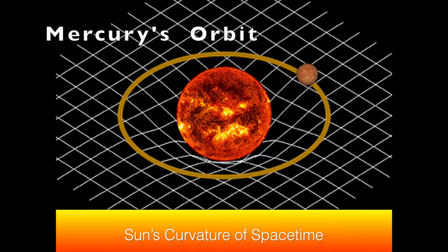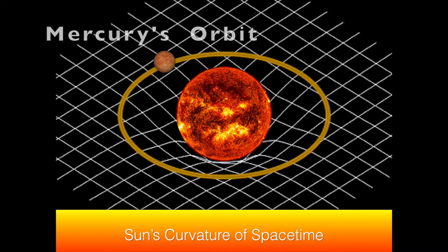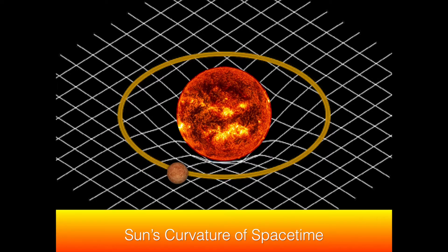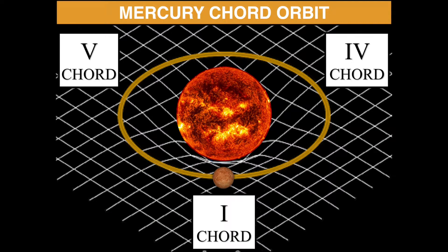We began with Mercury's quick 88-day orbit and strong gravitational force, represented through Mozart's quick chord cycle with chords like the IV and V chord that have a strong pull to resolve back home to the I chord.